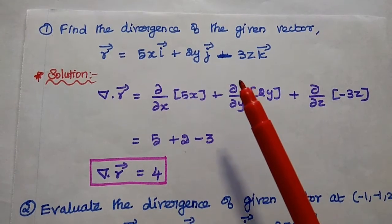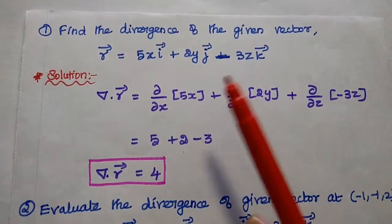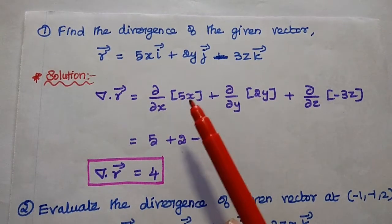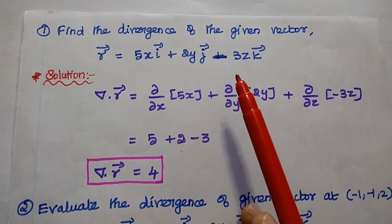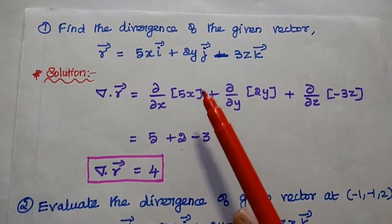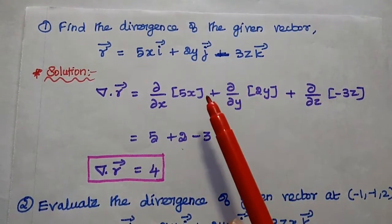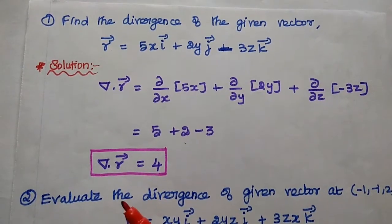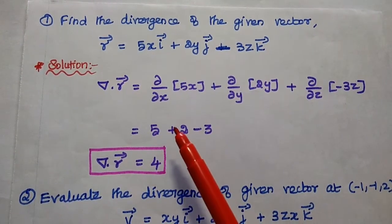The first problem: find the divergence of the given vector. The given vector is r = 5x î + 2y ĵ − 3z k̂, where i, j, k represent the x, y, and z components respectively. We apply the divergence formula.